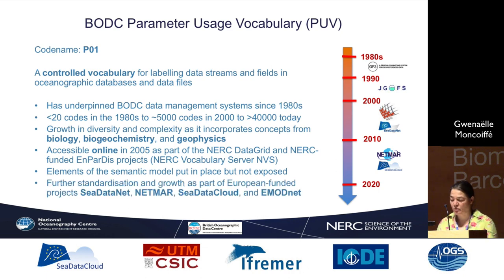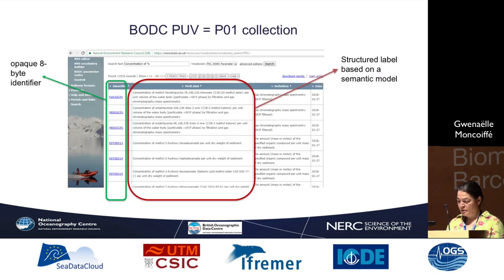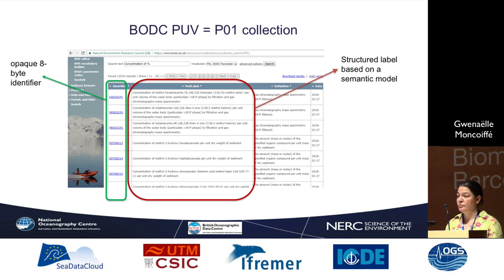Further standardization and growth has taken place as part of the European-funded projects SeaDataNet, Netmar, SeaDataCloud, and EMODnet. In particular, there has been incorporation of SKOS and RDF standards in 2012 as part of the development of the NERC Vocab Server version 2. The two main fields in the parameter usage vocabulary that I'm going to focus on are the 8-byte parameter code and the long name, which is in fact a structured label based on a semantic model.